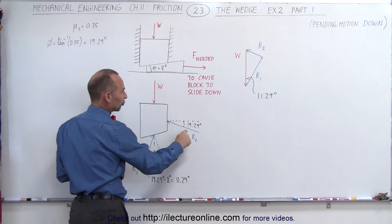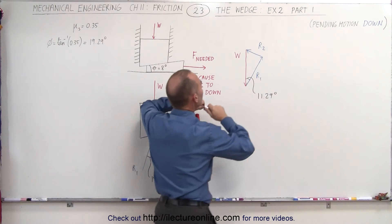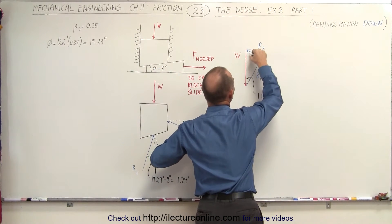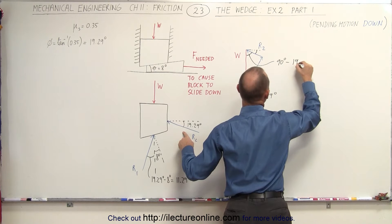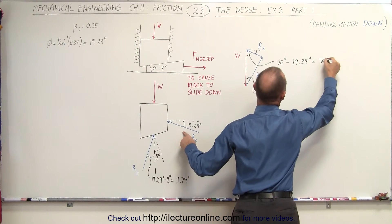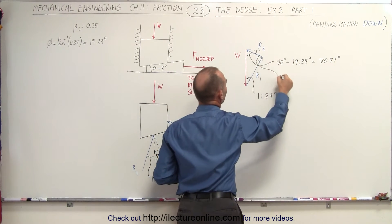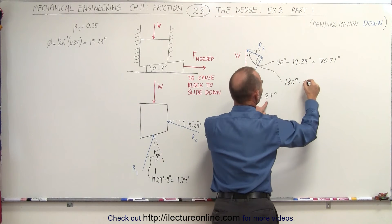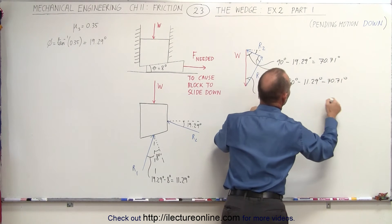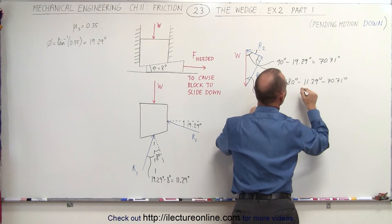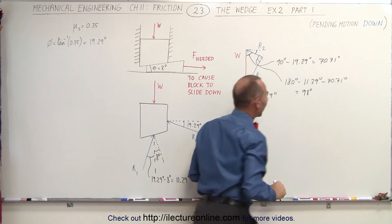The reactionary force R2 makes an angle of 19.29 degrees with the horizontal, which gives us that angle here. To find the complementary angle, we take 90 degrees and subtract 19.29 degrees, which gives 70.71 degrees. Finally, to find the third angle, we take 180 degrees and subtract 11.29 degrees and 70.71 degrees, which gives exactly 98 degrees.